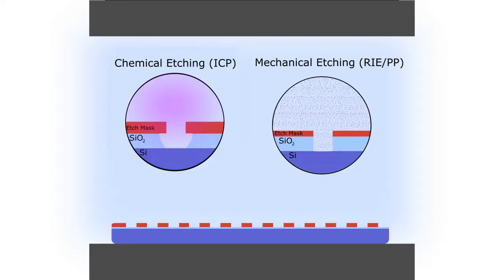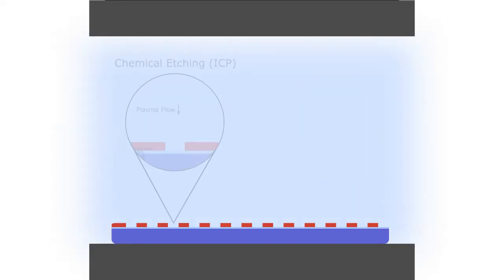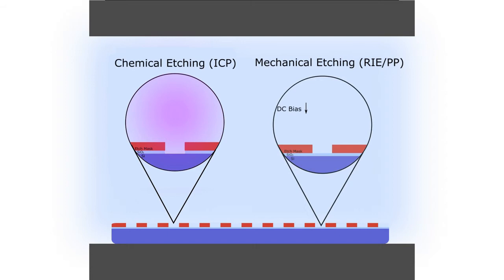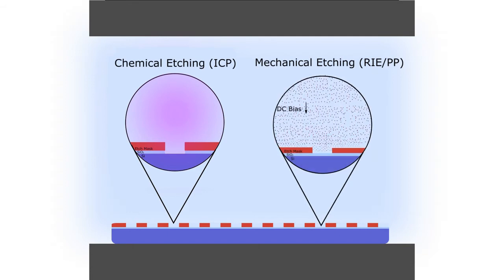This reflects the two distinct mechanisms of dry etching. The first is chemical. Ions from the plasma react with the etched material forming gaseous products that can be removed from the chamber. The second is mechanical. The plasma has so much energy that it knocks atoms off the sample, which is known as sputtering.